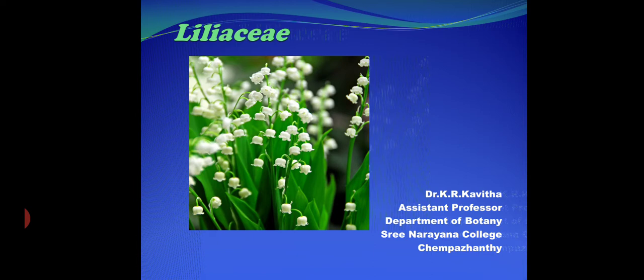Altogether there are 34 families. The seven series include Microsperma, Epigyne, Coronaria, Calicinae, Nudiflorae, Apocarpiae, and Glomeraceae. The Liliaceae family is placed in the third series, which is Coronariae. The systematic position of this family is: monocotyledon, series Coronariae, family Liliaceae.